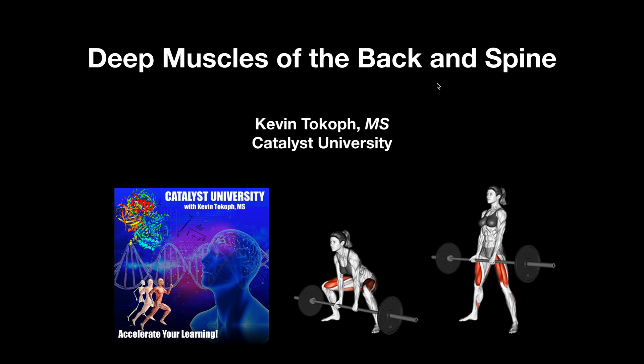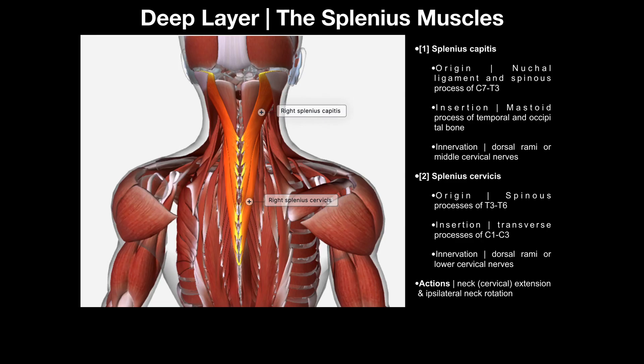The major movements we're going to see here are back extension, a little bit of lateral flexion, and also rotation-type movements. We're going to break this up into several videos. When we're looking at the deep layer, within the deep layer there are actually three sub-layers.